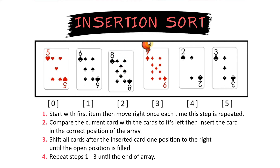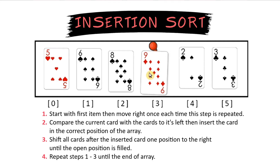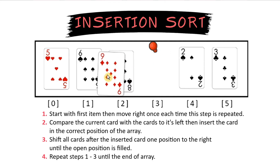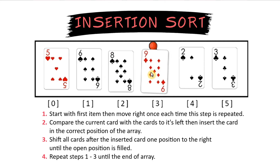We move over to the next card, which is the 9. We check to see where would 9 fit in this array. Since it's larger than 8, it's not going to move anywhere and it's already sorted.